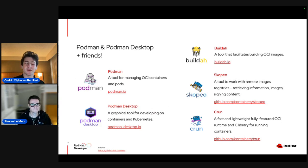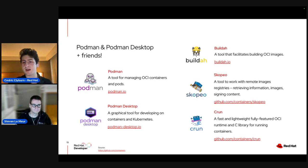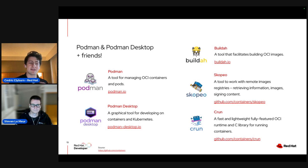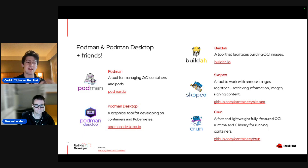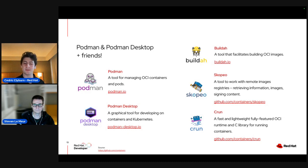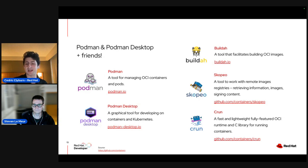You've also got Buildah — in a CI situation using Tekton, you can use Buildah to build an OCI image. You can use tools like Skopeo to move an image from Docker Hub to a different private registry without downloading it to your local machine. Or CRUN, which is an OCI runtime with impressive performance benefits. All of these are linked and we'll drop the slides link so you can check them out.